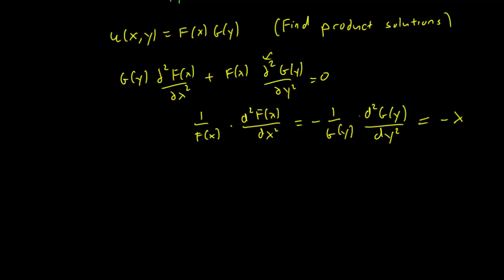It turns out that the minus lambda choice is the more convenient one here. It's going to depend on the boundary conditions you pick. The main point is that we want our eigenvalue problem to have f double prime plus lambda f, and that's why we picked the minus lambda here.